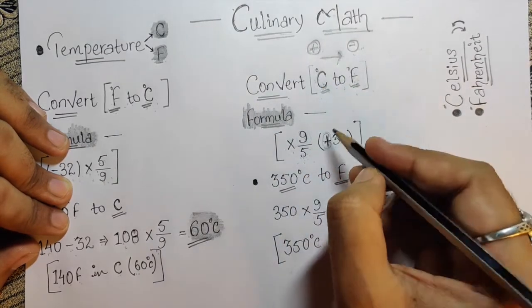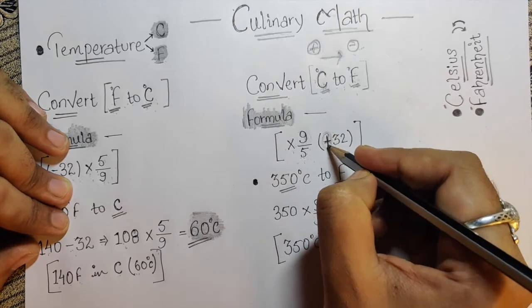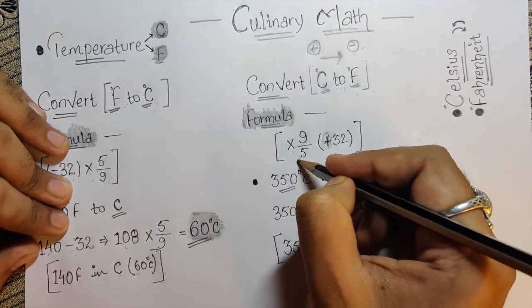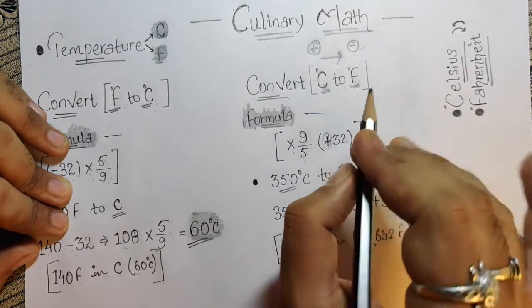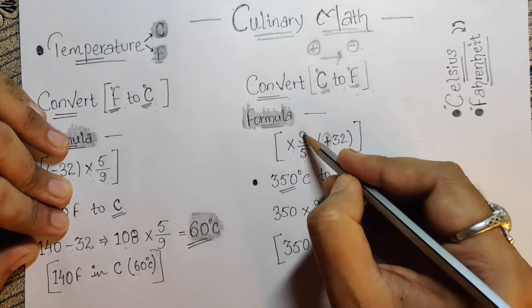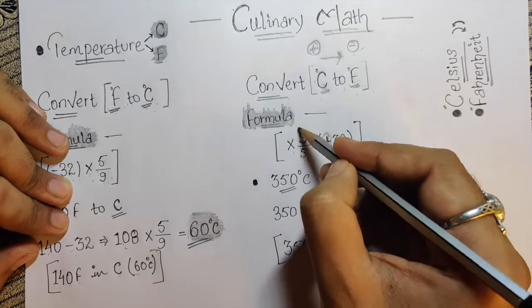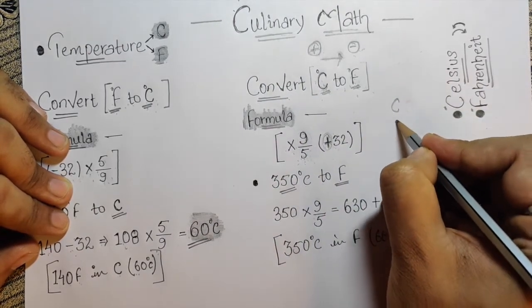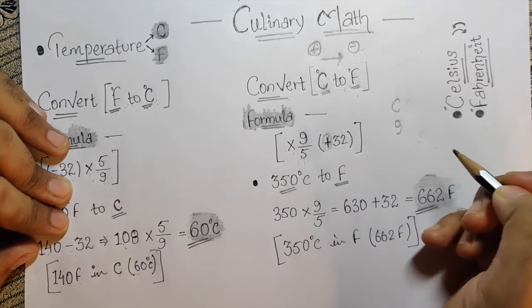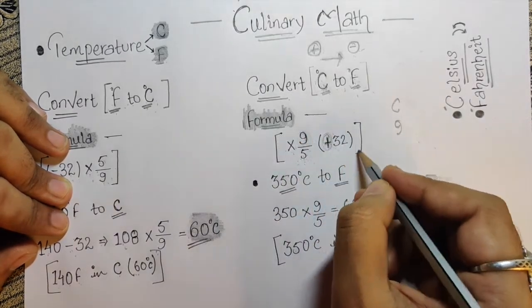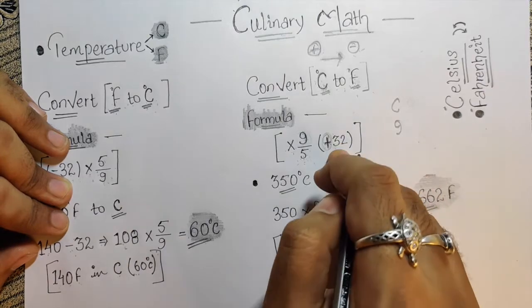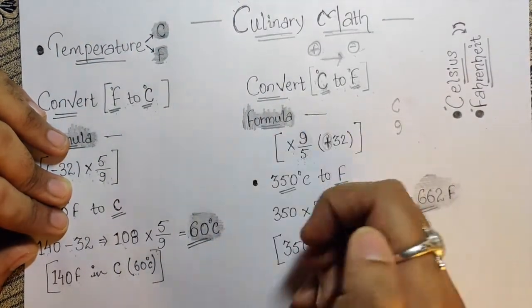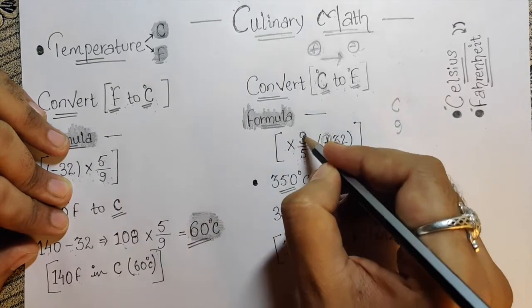How do I remember if it's 5 divided by 9 or 9 divided by 5? It's a simple trick. Do you see C? The letter C is like this. If I turn it over, what will it be? It will be 9. You'll never forget this. When it comes to C to F, this will be back and this will be back. Focus on this plus sign.